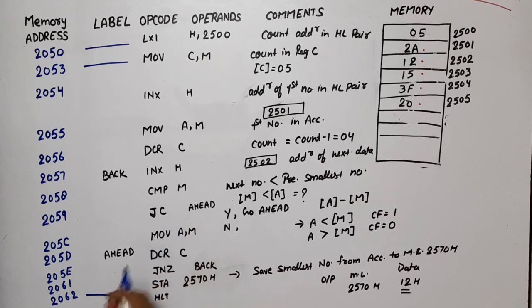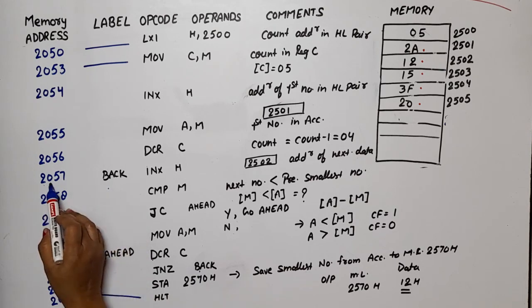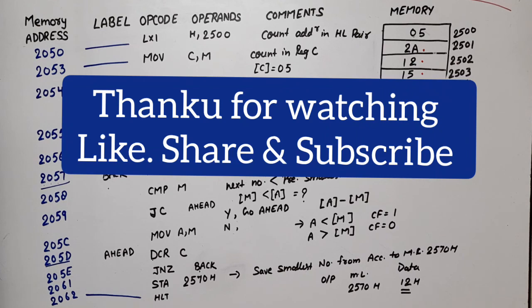When we feed the program, the AHEAD location is 205D, which is the location of DCR. The BACK location for JNZ is 2057. I hope you understand. If you still have any doubt, please write down in the comment section. Thank you.